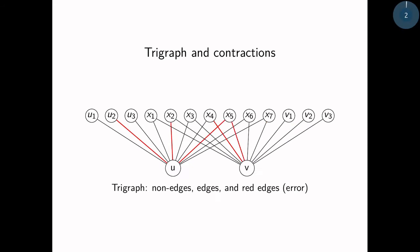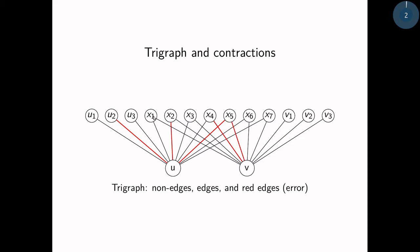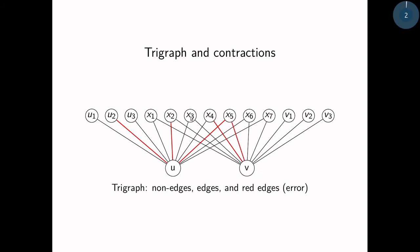It will affect the colors of the edges incident to u and v in the following way. Vertices that are private neighbors of u, like u1 to u3, or private neighbors of v, like v1 to v3, will be now linked to the contracted vertex uv with a red edge. If you look at the intersection of the neighborhood, that is x1 to x7, there will be a black edge between such a vertex and uv if and only if it was linked with a black edge to u and to v. Every other combination—a red edge, a black edge, or two red edges—will give a red edge.